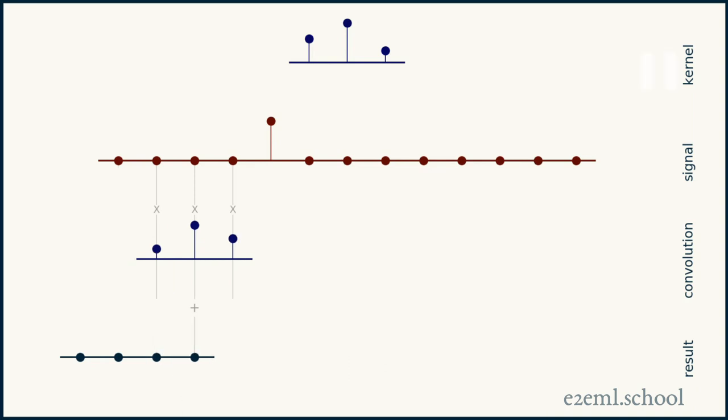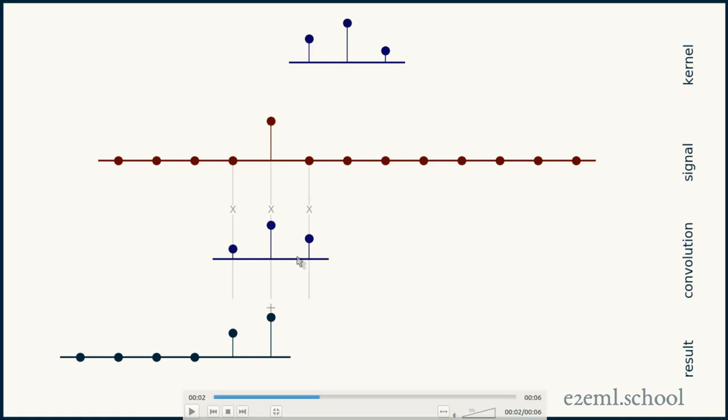And then you slide it one step to the right and do it again. This process of multiplying each aligned pair of points together and then adding all of those products together is called taking the dot product, and moving our kernel one position at a time and repeating this is a sliding dot product. So a convolution is a sliding dot product of a flipped kernel with the signal.